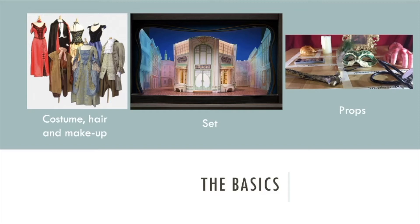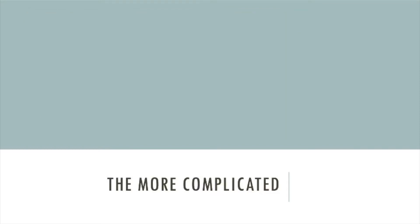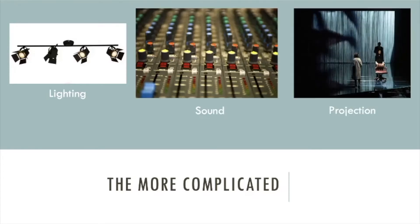Those are the basics. Then we start going to the slightly more technical. Realistically, those three things you could at least plan or come up with ideas for without having been trained. But the next ones you need training for. That is lighting, sound, and projection. All three of these have the same purpose: to create atmosphere, to make the audience feel like they are there with the actors. So we've got lighting — spotlights, bright lights, coloured lights — while the audience sits in the dark, all to highlight the performers and add to the atmosphere.